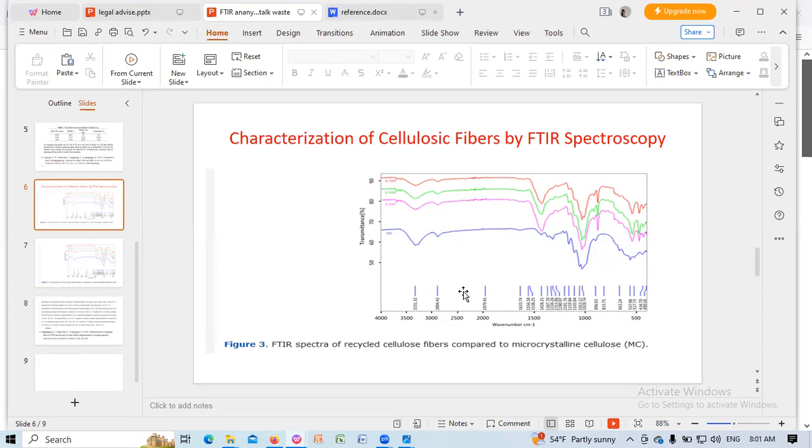And we can see in the fingerprint region, the peaks and typical bands from 1630 to 900 per cm. We see the peak at 1633 per cm. This is due to the water molecule in the cellulose.